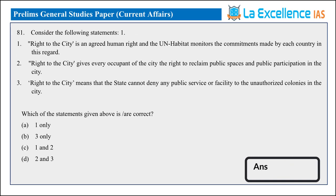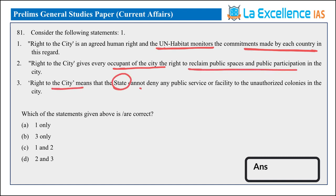Next, the Right to City initiative. Right to City is a recognized human right and UN Habitat monitors the commitment given by each country under it. Right to City gives every occupant of the city the right to reclaim public spaces. It means the government cannot deny public services or facilities to unauthorized colonies in the city. Clearly, the third statement is incorrect. By eliminating that, we can say 1 and 2 are the right statements — answer is C.